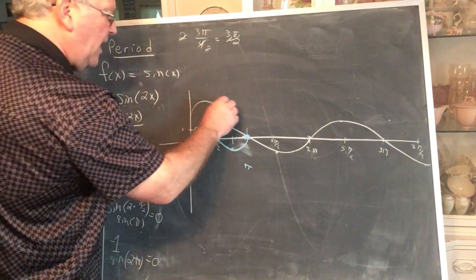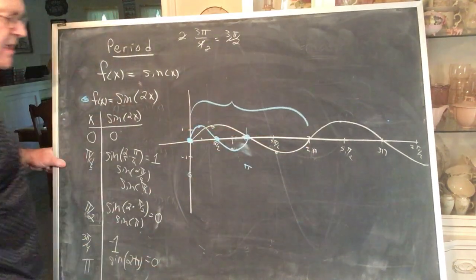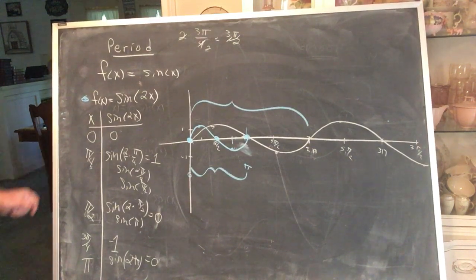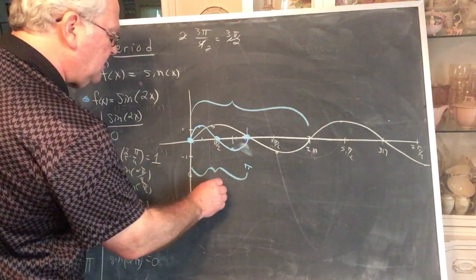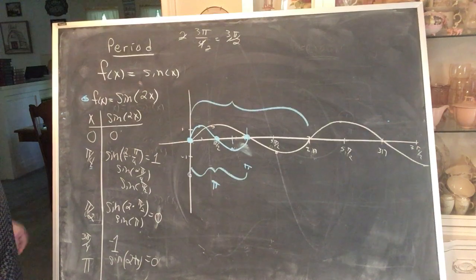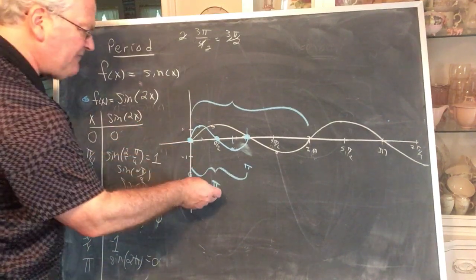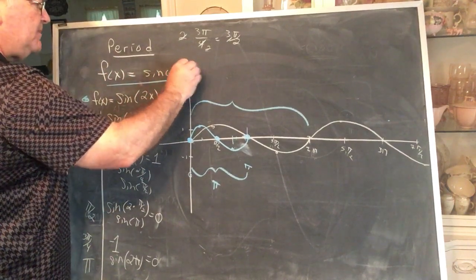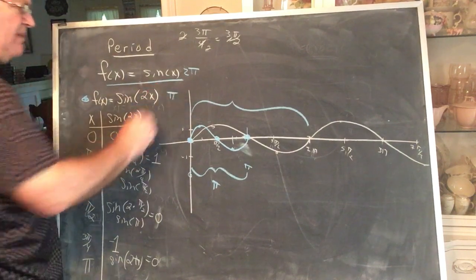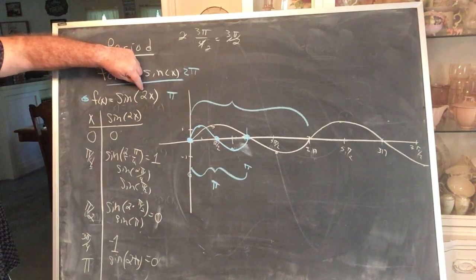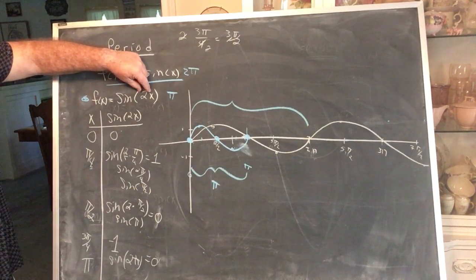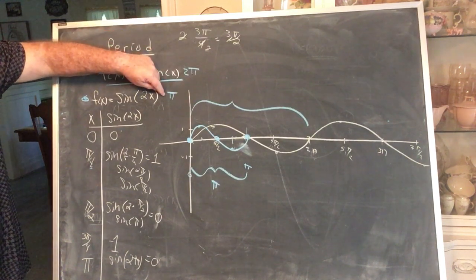And instead of taking all the way from 0 to 2π to go through one complete cycle, we've gone through one complete cycle between 0 and π. Remember, the period is the minimum distance required to go through a complete cycle. In this case, the period is π. So it is half as much as what it was for the original function. The period for this function is 2π. The period for this function is π. Do you see what happens? When you multiply this variable by 2, the period is halved. It's half as much.